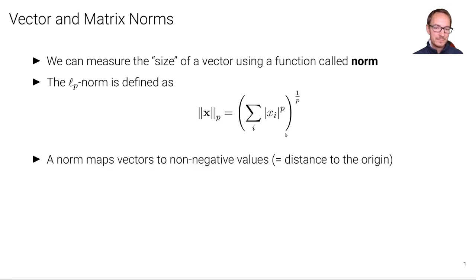We can see through this equation that a norm, a vector norm, maps vectors to non-negative values. And we can interpret this as measuring the distance to the origin according to this particular P norm.